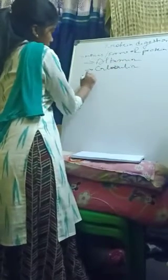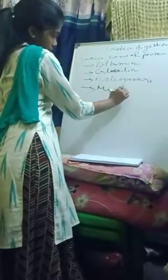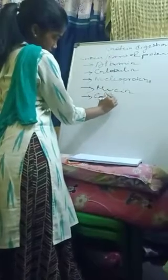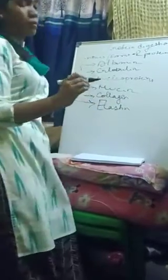Except those, nucleoproteins, mucin, collagen, and elastin are also types of protein present in most dietary sources. Whether they are from a vegetarian or non-vegetarian dietary source, these are the most common proteins found in food particles.